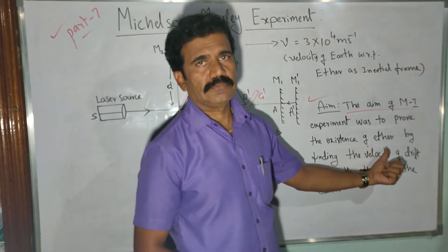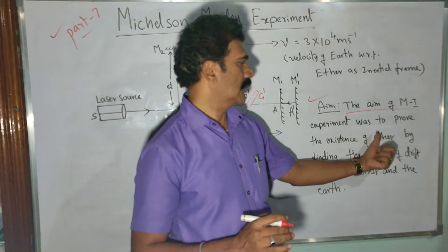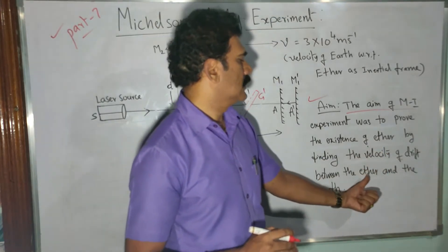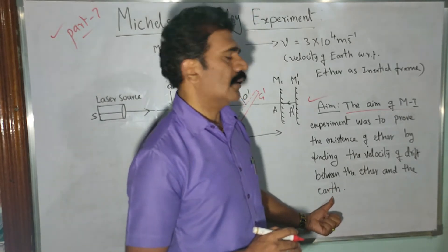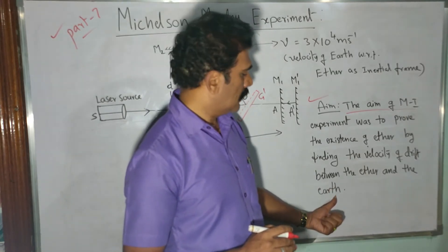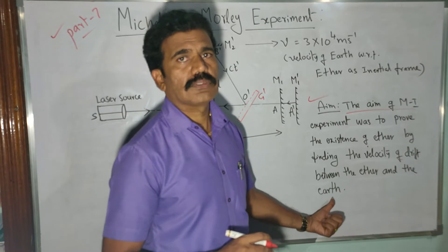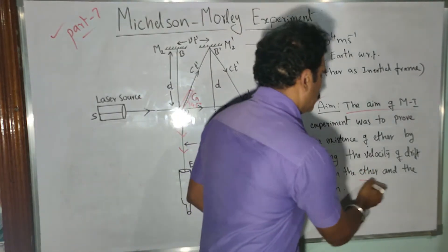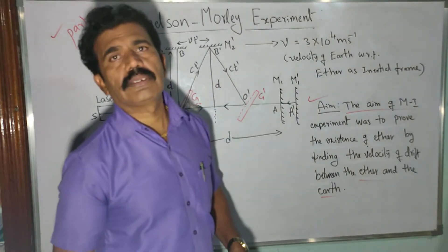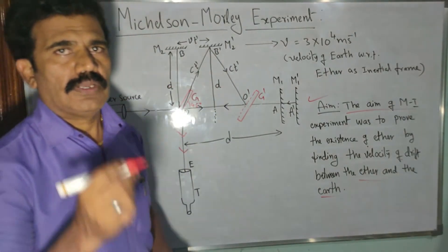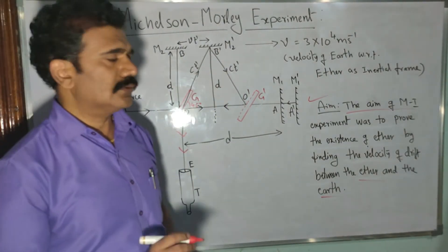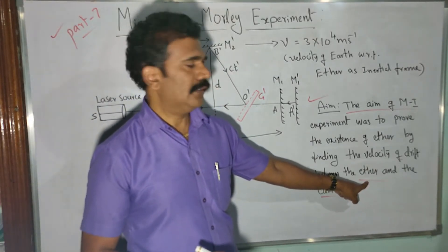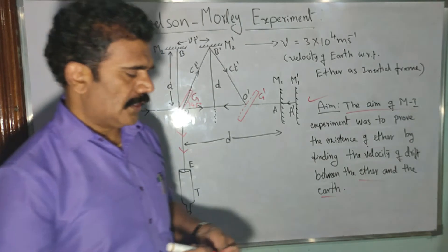In order to prove whether ether exists, they conducted this experiment by finding the velocity of drift between the ether and the earth — trying to find the motion of the earth with respect to ether as an inertial frame. They also aimed to determine the velocity of light with respect to ether as an inertial frame.